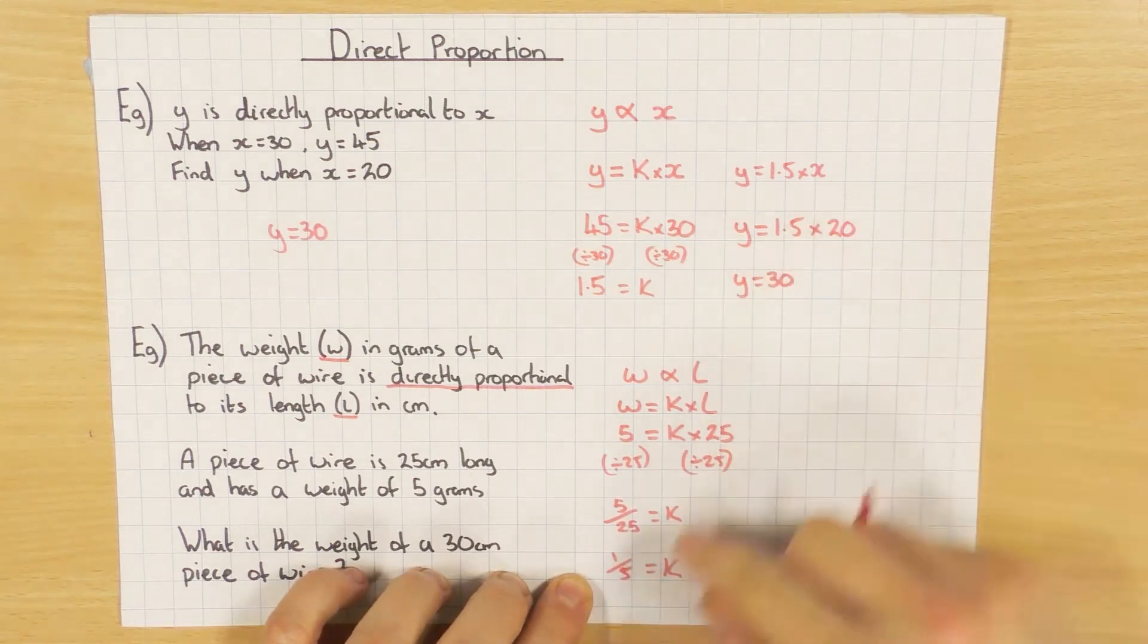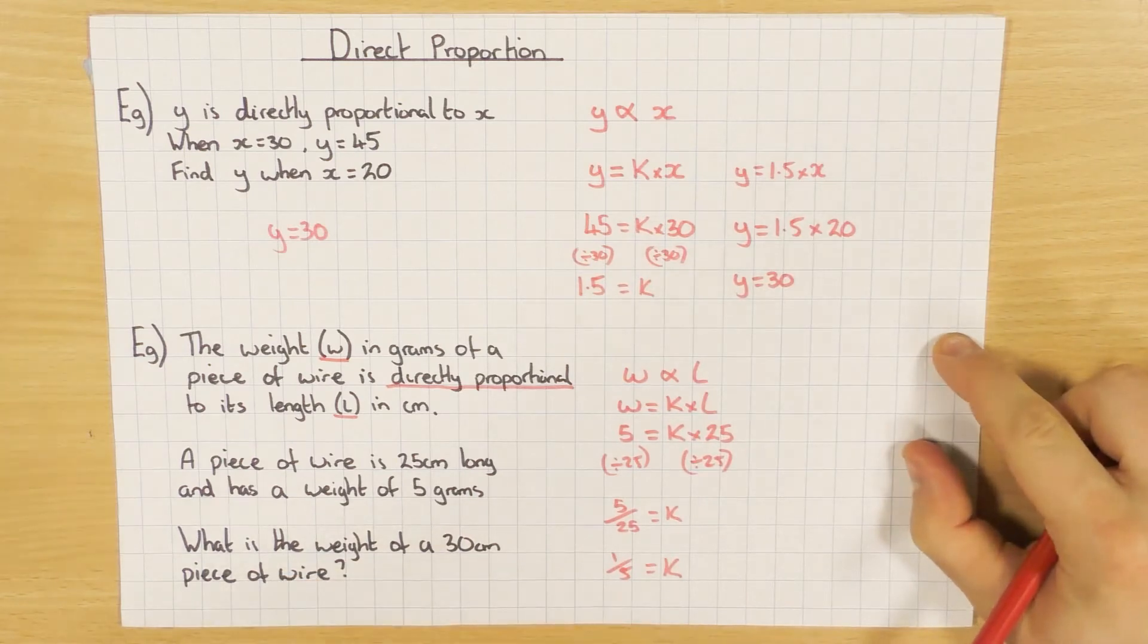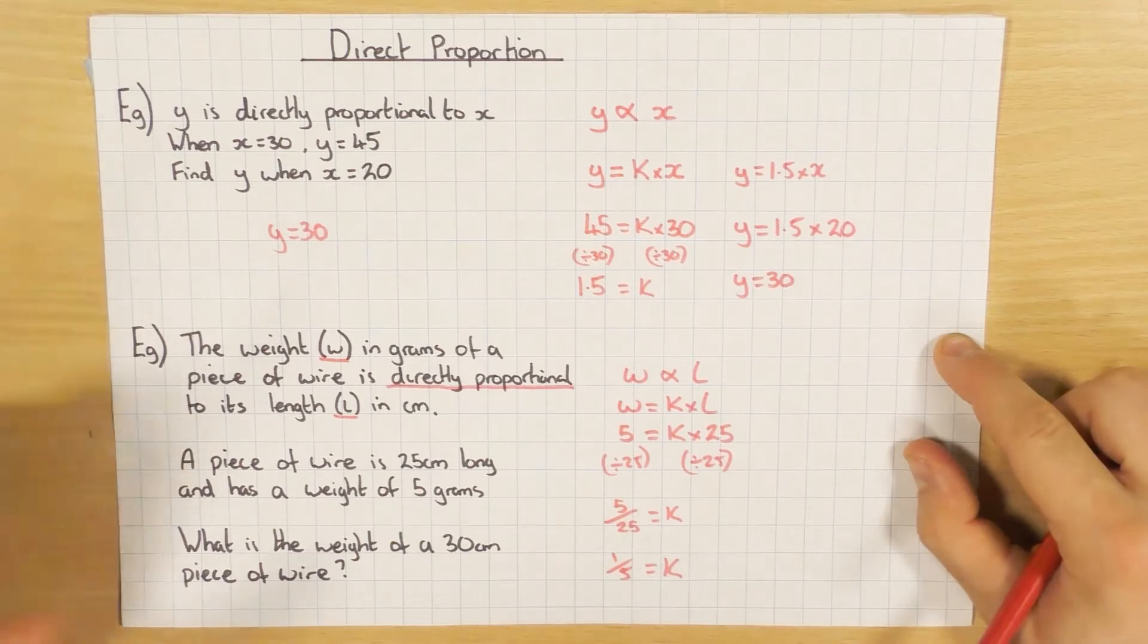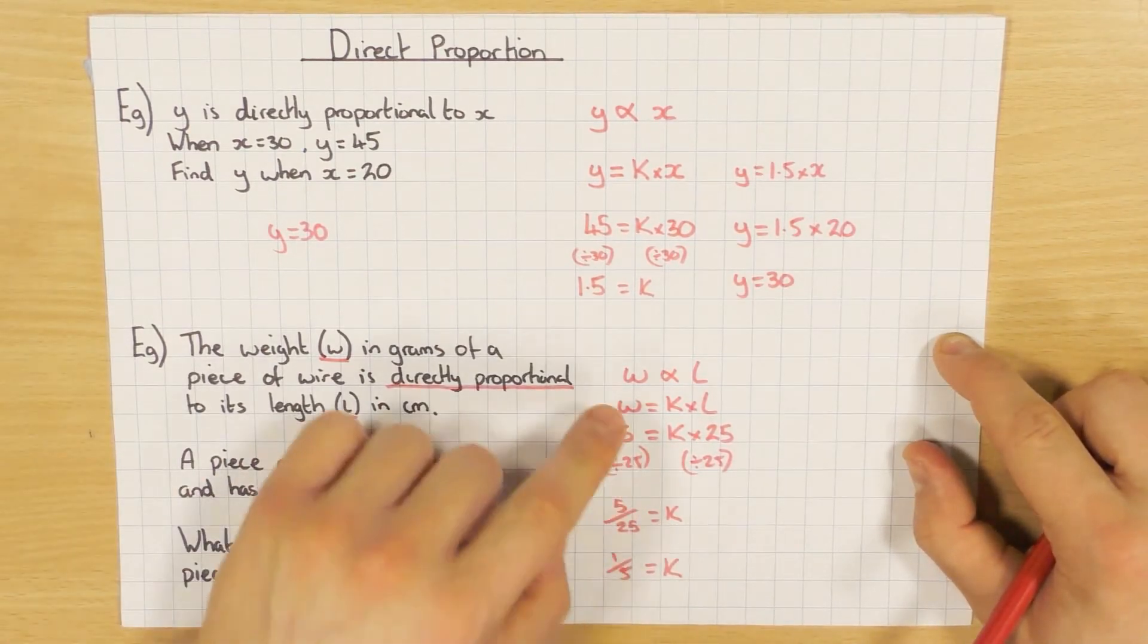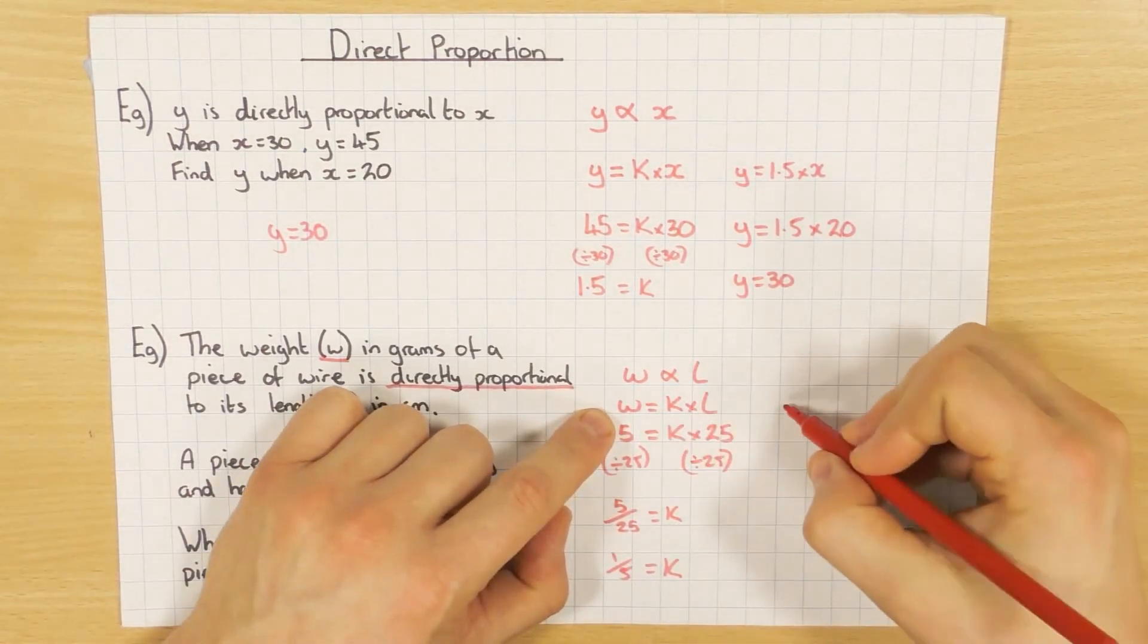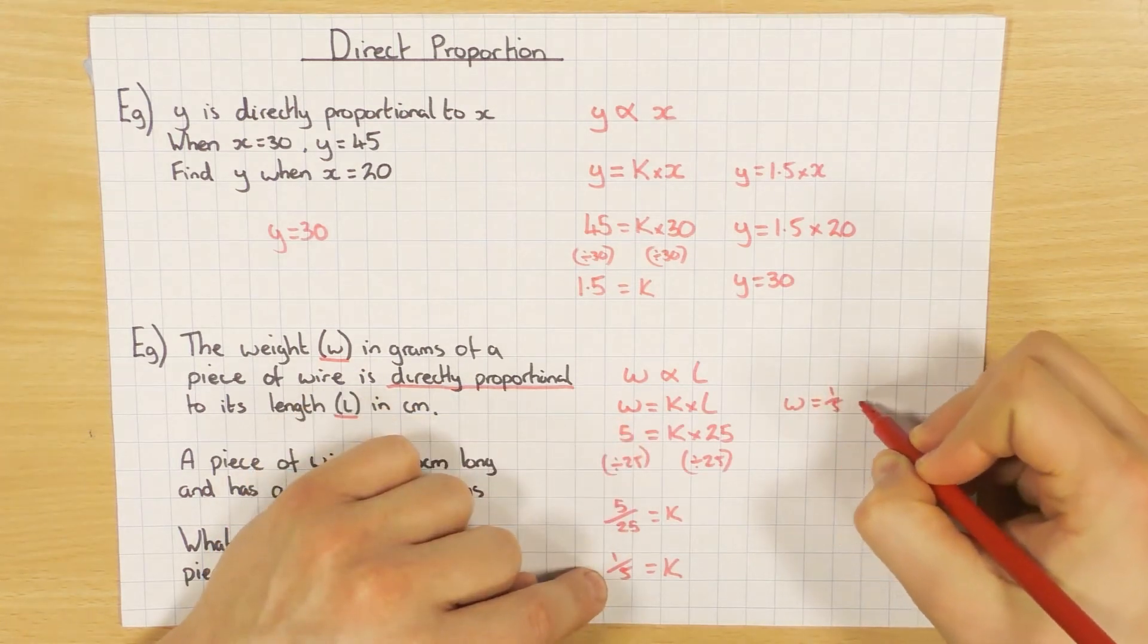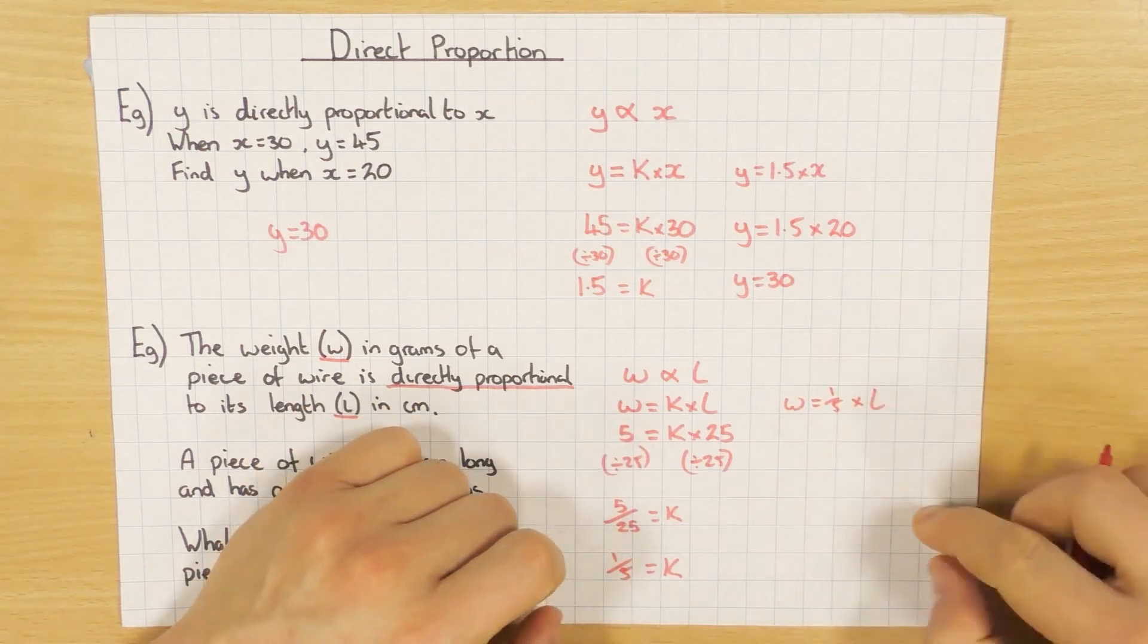You can use a decimal if you want, like we did up here, or you can keep it as a fraction. It does not matter. So in this particular example, I'm going to keep it as a fraction just so you can see both. So go back to your formula, which was w equals k. Well, k is now one-fifth. So one-fifth times l. There we go.